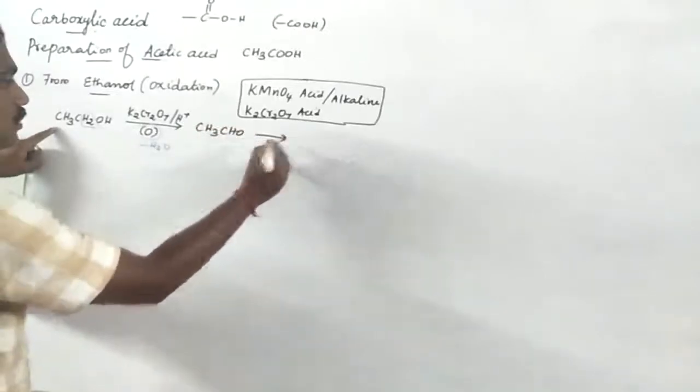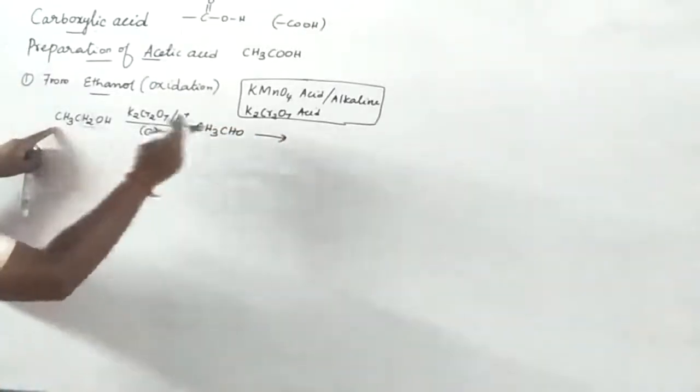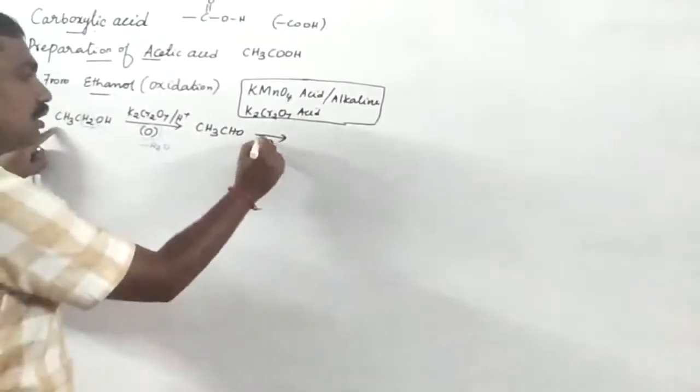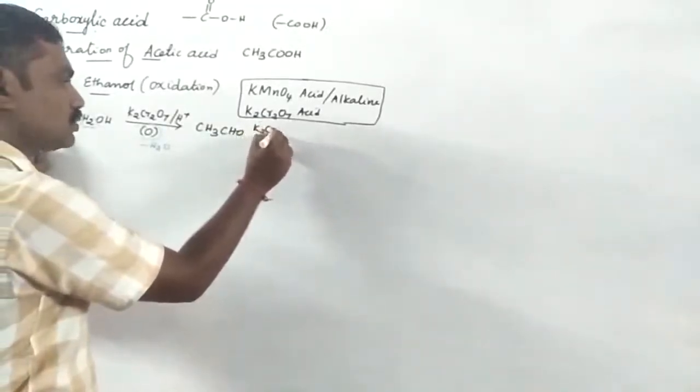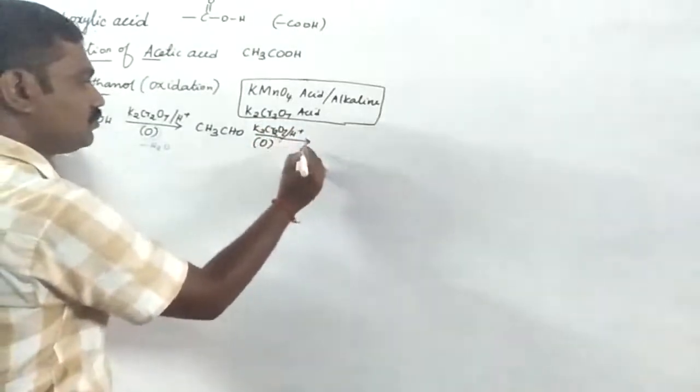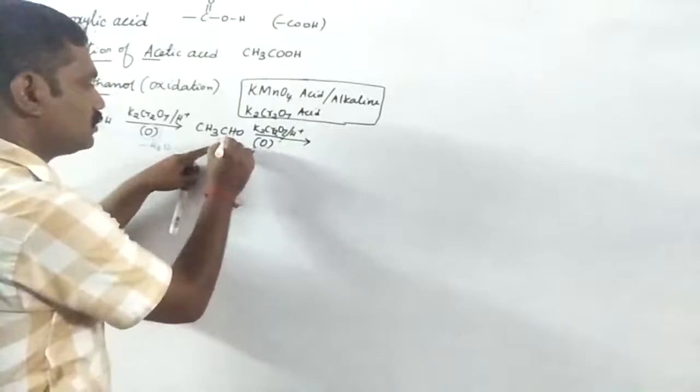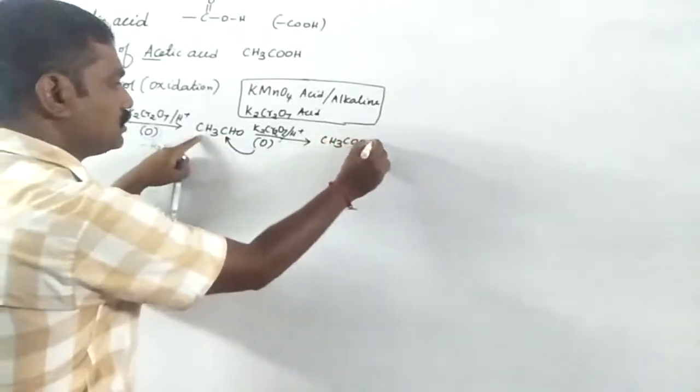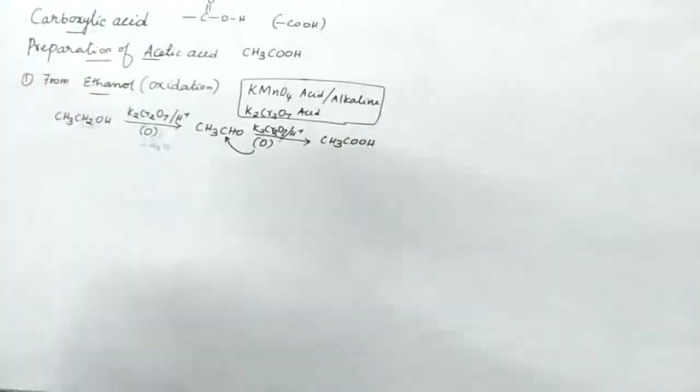Already we learned about primary alcohol. Oxidized to aldehyde, aldehyde oxidized to acid. Okay, so K2Cr2O7 with K2SO4. So oxygen is adding - CH3COOH, CH3COK, okay.